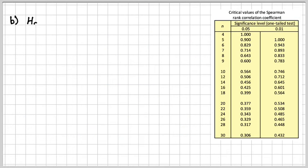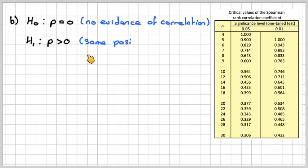In part b, we've got different hypotheses. H0: ρ = 0, so there's no evidence of correlation. And H1: ρ > 0, there's some positive correlation.